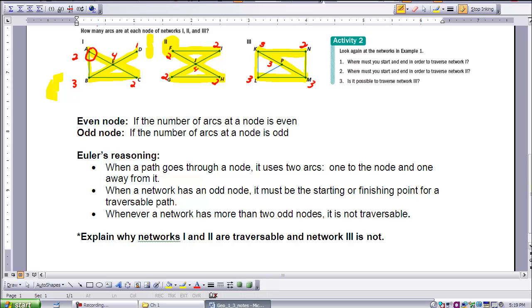But if we look at three, I had trouble tracing that network. And if you notice, it has more than two odd nodes. If he says that when a network has more than two odd nodes, it's not traversable. Actually I misspoke, I said it goes against it. Well, actually, it supports it. We were not able to traverse this network because it has more than two odd nodes.